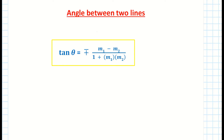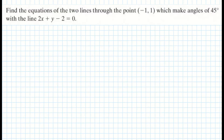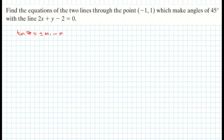Let's take a look at an example. This example is asking us to find the equations of two lines which pass through a point and which make an angle of 45 degrees with the line 2x plus y minus 2 equals zero. I'm going to put down the formula from the log tables: tan theta equals plus or minus m1 minus m2 all over 1 plus m1 times m2. That's taken from page 19.